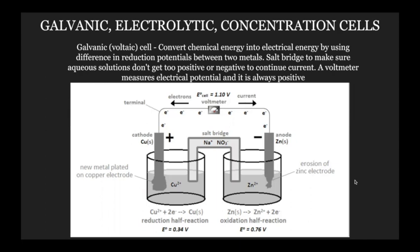Galvanic cells are a type of electrochemical cell. There are three types: galvanic, which is kind of your baseline or home base; electrolytic; and concentration. Galvanic cells are also called voltaic cells. The whole point of these electrochemical cells is to convert chemical energy into electrical energy using redox reactions — a super high-yield topic in chemistry — by using differences in reduction potentials between two metals.